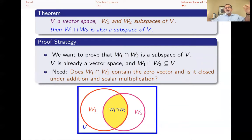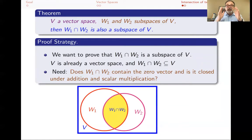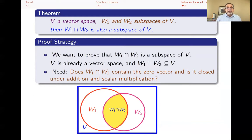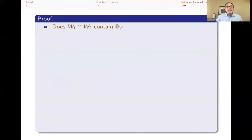You can think of it pictorially: V is the big vector space, W1 and W2 are both subspaces. The intersection consists of the elements that are in both W1 and W2 — the stuff in the middle, the yellow stuff — and that's what you want to show has the zero vector and is closed under addition and scalar multiplication.